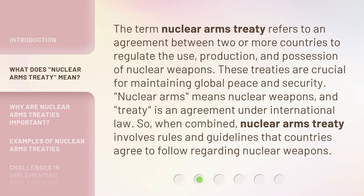The term Nuclear Arms Treaty refers to an agreement between two or more countries to regulate the use, production, and possession of nuclear weapons. These treaties are crucial for maintaining global peace and security. Nuclear arms means nuclear weapons, and treaty is an agreement under international law. So when combined, a Nuclear Arms Treaty involves rules and guidelines that countries agree to follow regarding nuclear weapons.